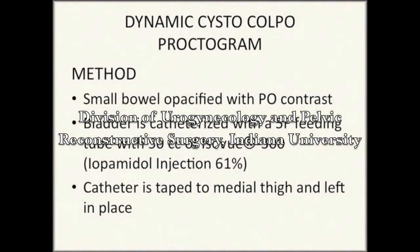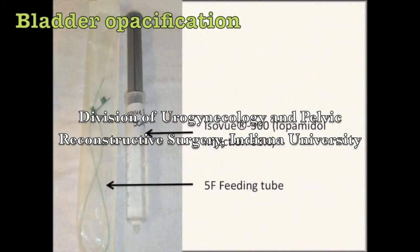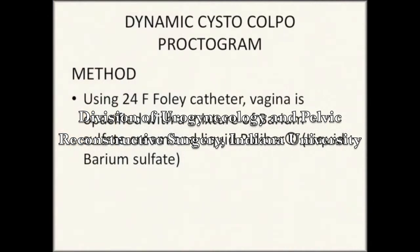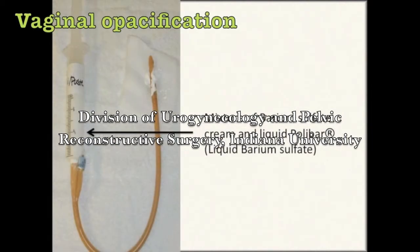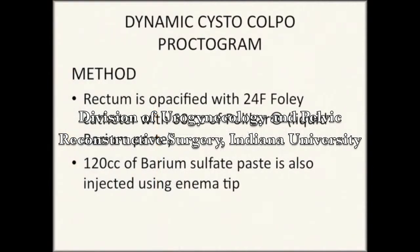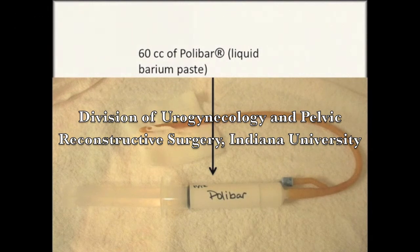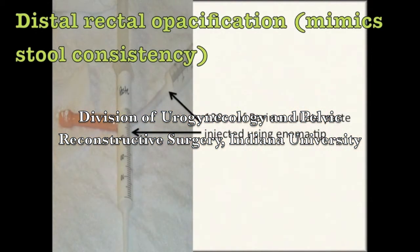Prior to performing the study, the small bowel is opacified with oral contrast. The bladder is opacified using a 5-French feeding tube with 50 cc of iodamidol injection. Using a 24-French Foley catheter, the vagina is opacified with a mixture of barium sulfate cream and liquid barium sulfate. Using a 24-French Foley catheter, the rectum is opacified with 60 cc of liquid barium sulfate. 120 cc of barium sulfate paste is also injected using an enema tip in order to mimic stool consistency in the distal rectum.